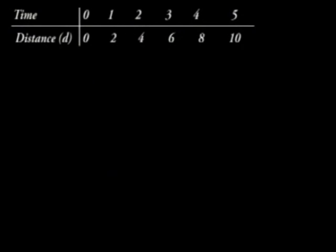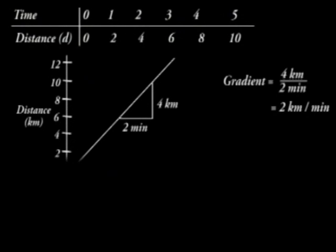Distance time graph. If the distance covered by a moving object is recorded at certain time intervals, the values obtained can be used to plot a distance time graph. Consider the values shown below. The following graph can be obtained from the values.